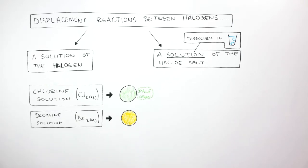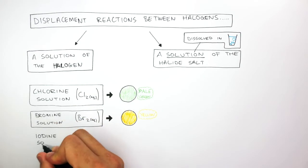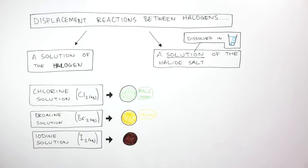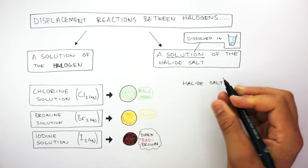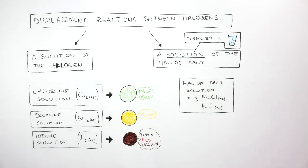Iodine solution (I2 aqueous) has a dark red-brown color. You can recognize iodine solution by the dark red-brown color. Whereas halide salt solutions, such as sodium chloride or potassium iodide, are colorless. Halide salt solutions are always colorless.